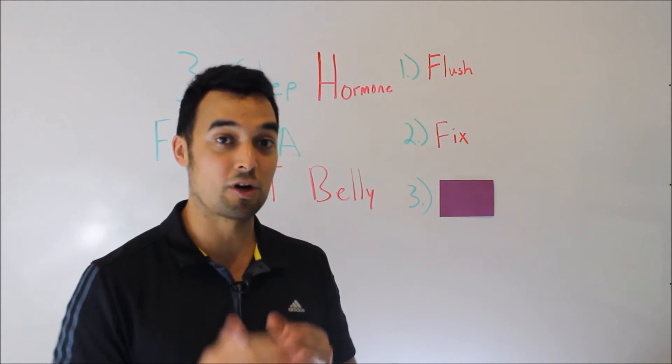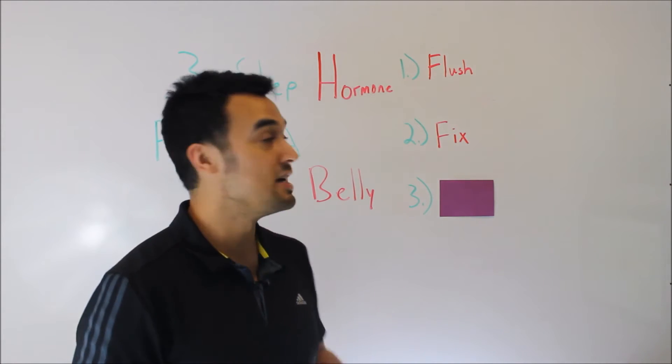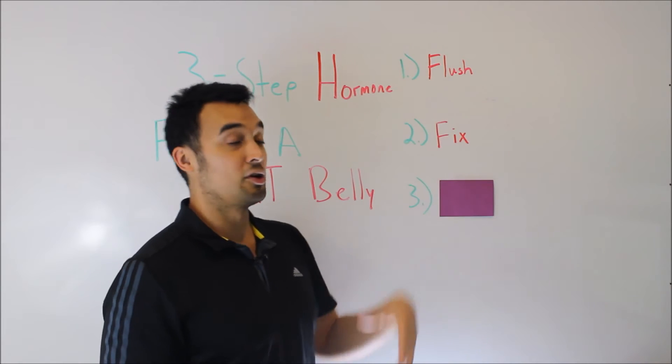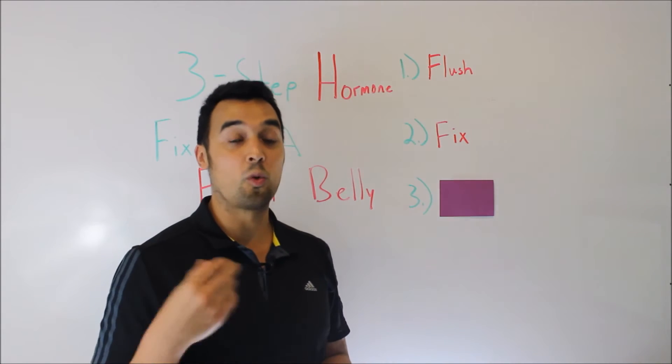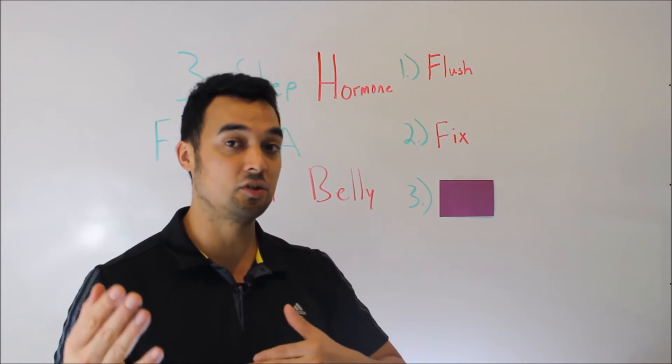And so that is what the second phase of the flat belly system does. In this phase, women are losing anywhere from 4 to 21 pounds. 21 pounds is a lot to lose in 21 days, but if you have a lot of weight to lose, you'll be able to lose more and it won't be quote unquote unhealthy.